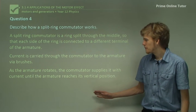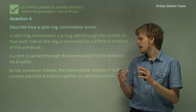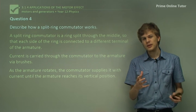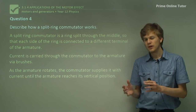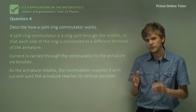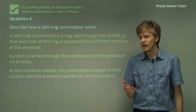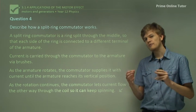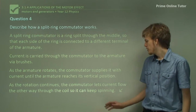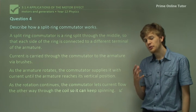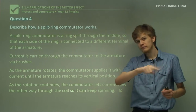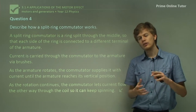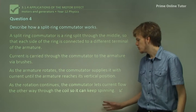As the armature rotates, the commutator will supply it with current until the armature reaches its vertical position. At this point, the split in the split-ring commutator is what's closest to the brushes, so when the coil reaches its vertical position, there is no current passing through it. When the rotating continues, the commutator will have current passing through it the other way — the commutator automatically reverses the direction of the current through the coil. This means that in the magnetic field, it will always experience a torque in the same direction and turn continuously.